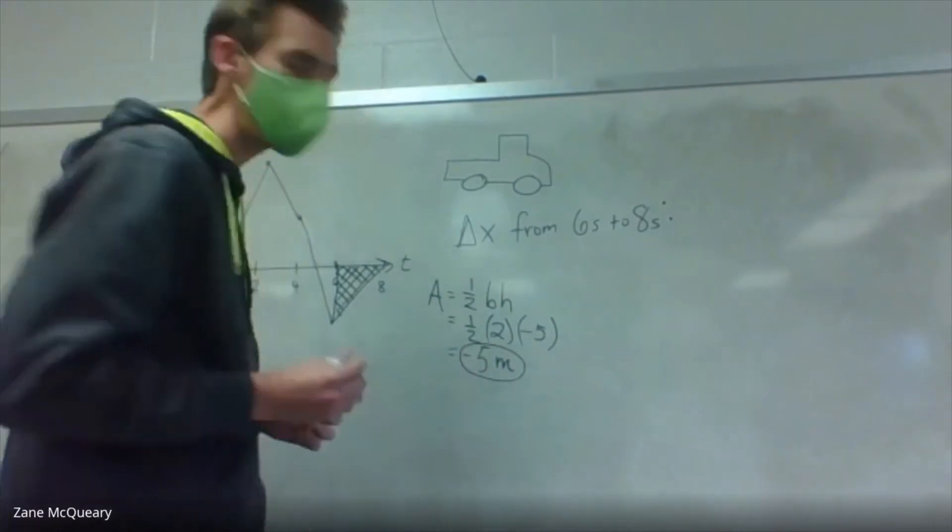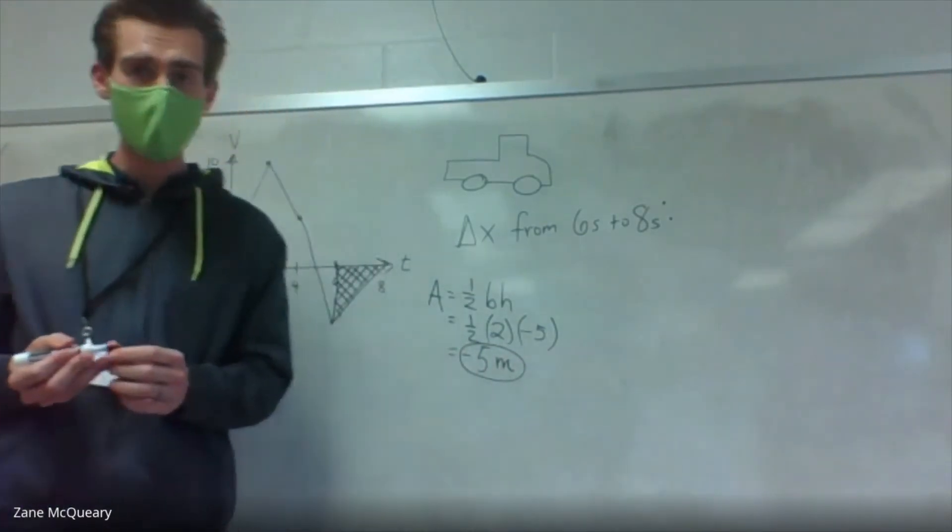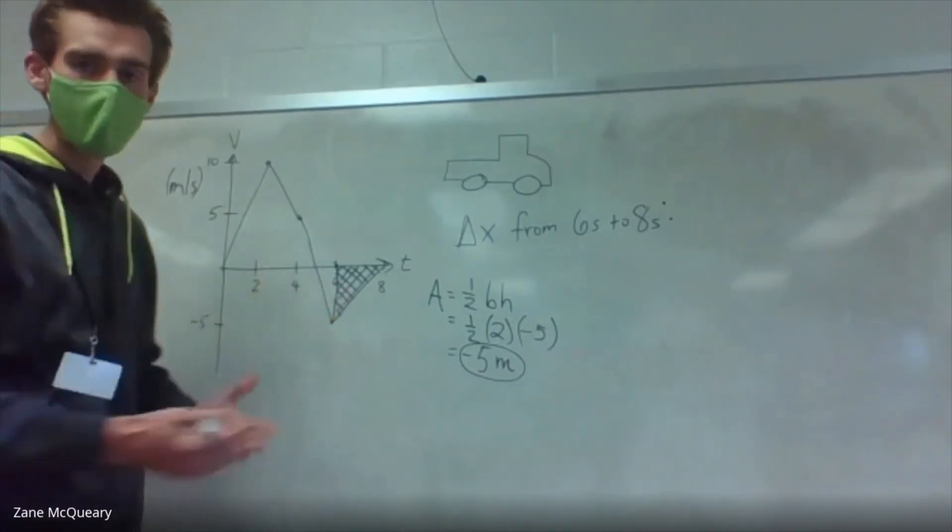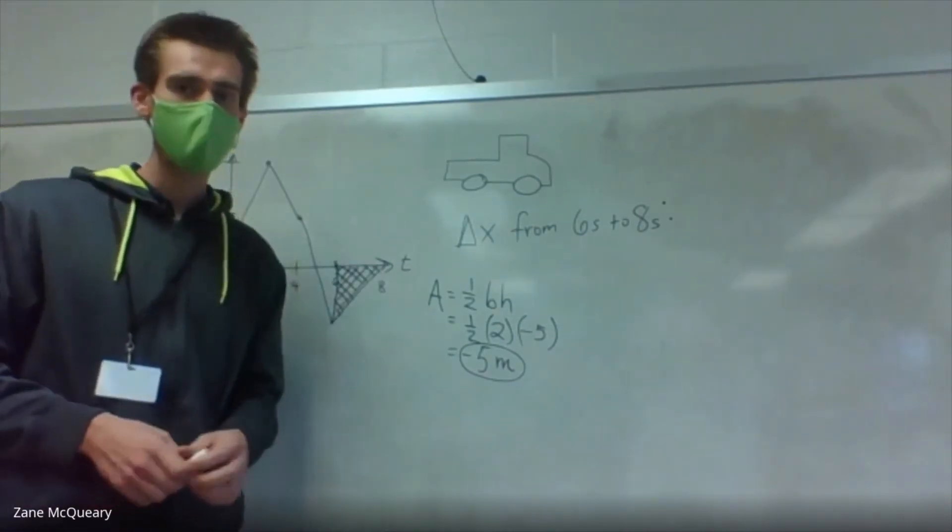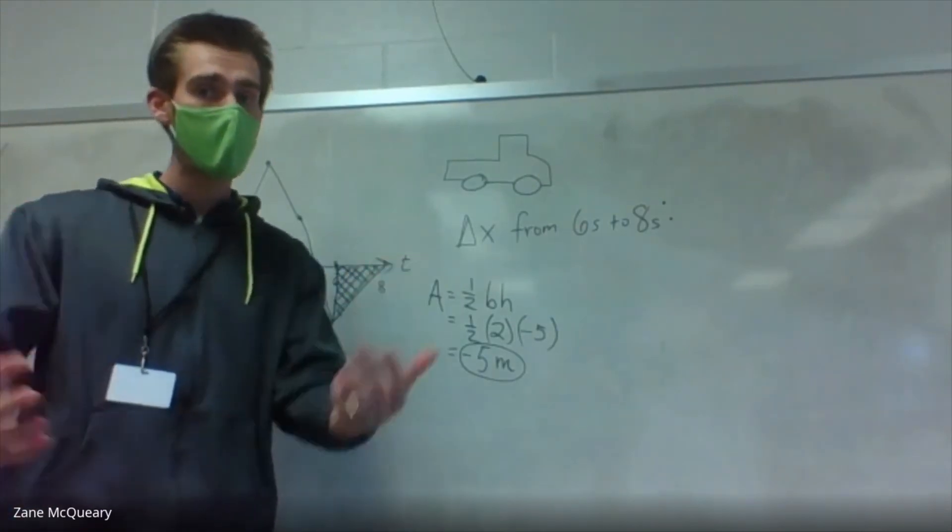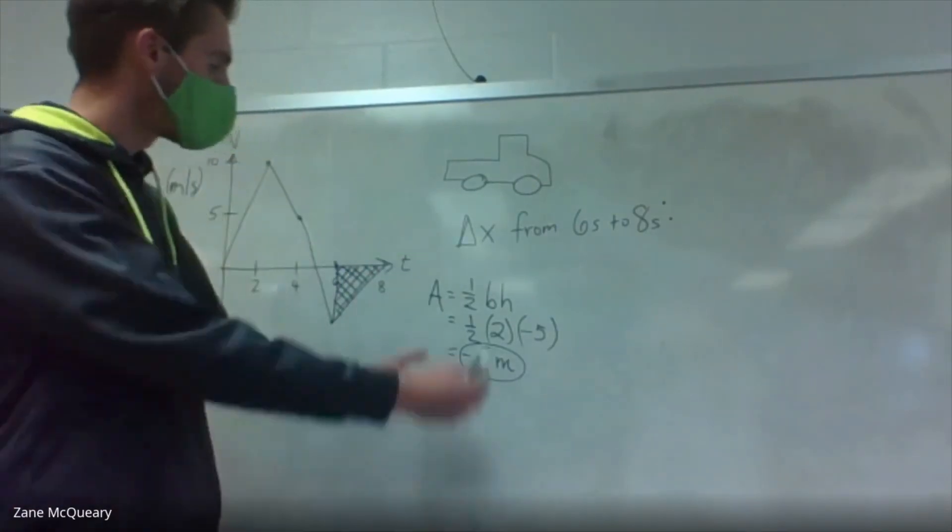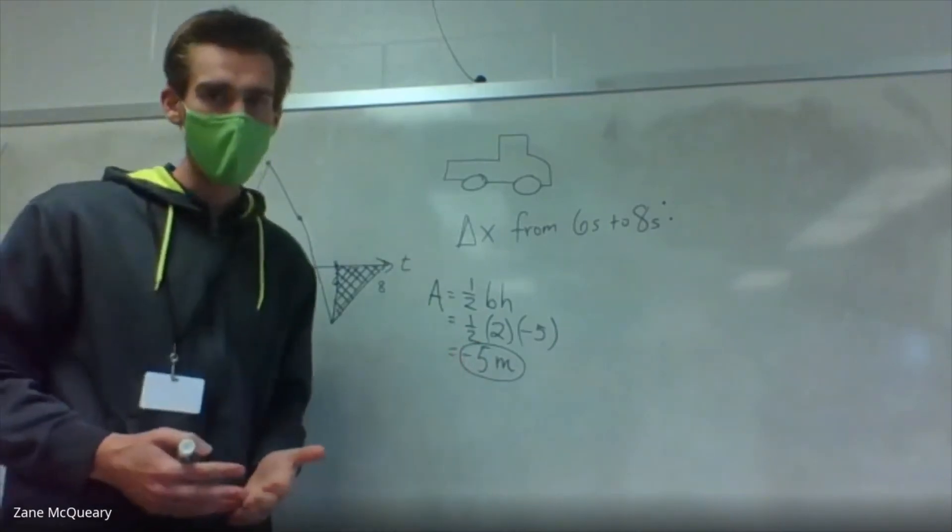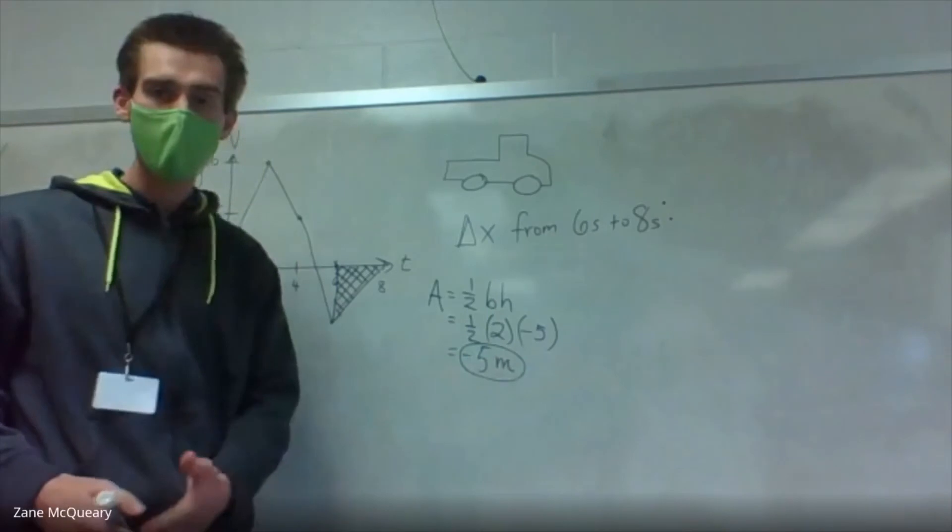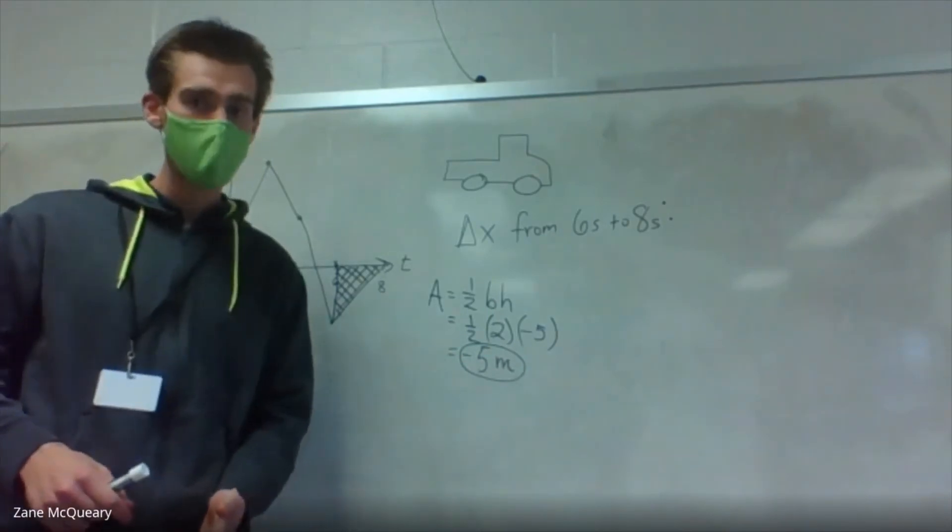One of the questions you might have right now is why is it negative? Well, consider the graph over here. That entire triangle is below the x-axis. Therefore, it's traveling to the left, a.k.a. backwards. So that negative lets us know that you traveled in that left direction, negative five,